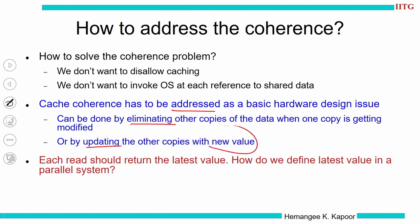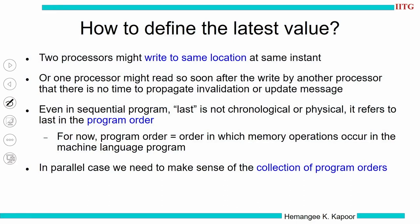When we say update with a new value, this essentially means that whenever we do a read to a location, we are going to get the latest value of data. This was also seen in the memory model — whenever you go to read into memory you are always going to get the latest item. Now how do you decide the latest value? Two processors might write to the same location at the same instant, both doing a write back, and there may be another processor which wants to read this value. Suppose x equals 5 and x equals 7 are the two values being updated, and there is another processor P3 which wants to do a read on x.